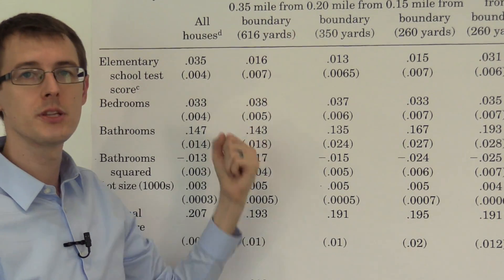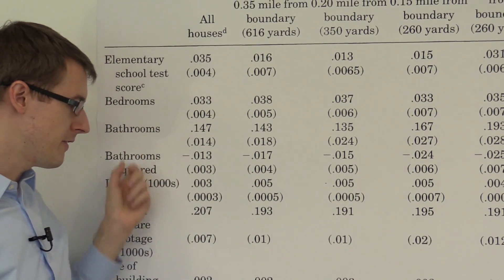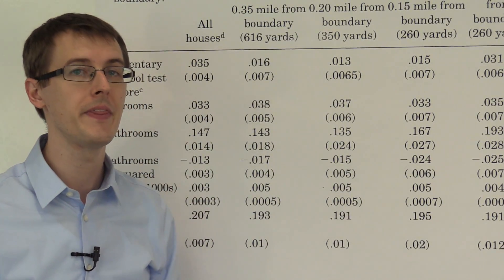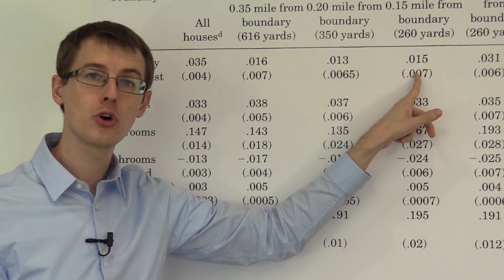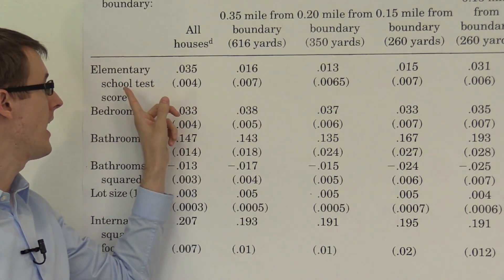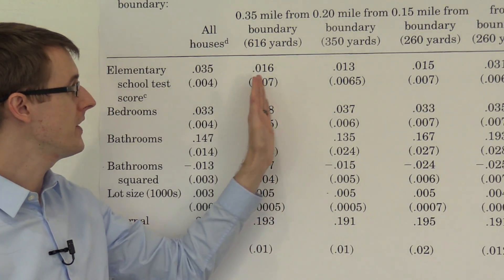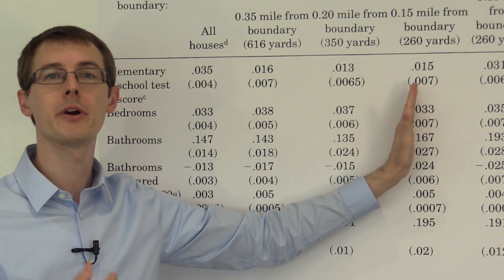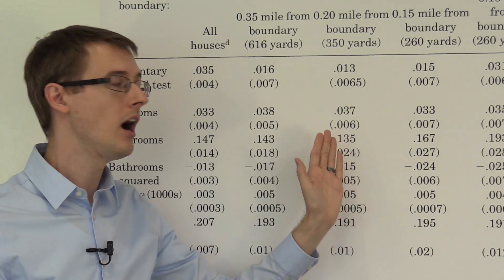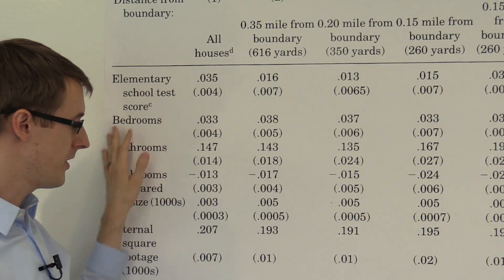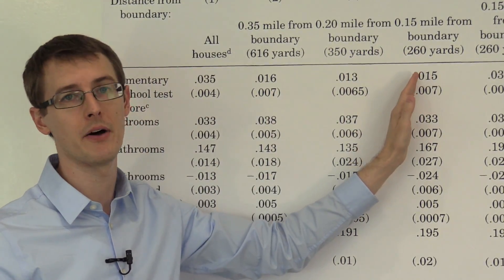And because we're close to the boundary, and we believe that these houses are not only similar in the variables we're controlling for, but they're also similar in the unobserved confounders, we believe that these are actual causal effects of elementary school test score on house prices. So that's the main finding in this paper. These numbers right here that implement the regression discontinuity idea by just doing an actual regression on house prices with some control variables, but only looking at the particular units that are close to the boundary.